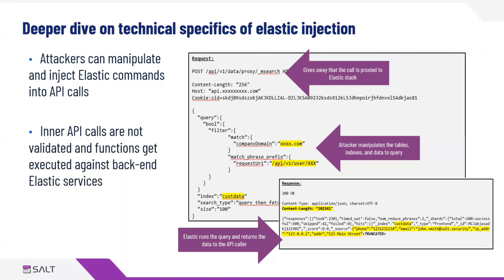In this case, it was unauthorized data disclosure. This particular attack could also have been used to create an application-layer denial-of-service attack. As you can see in that screenshot of the POST request, there was a size parameter that could also be manipulated. You can create a domino effect of increasing query sizes, in turn impacting availability — not just of the Elastic services, but also of your web servers.